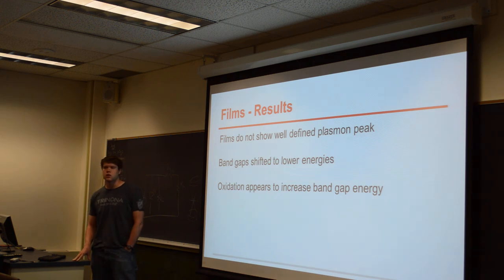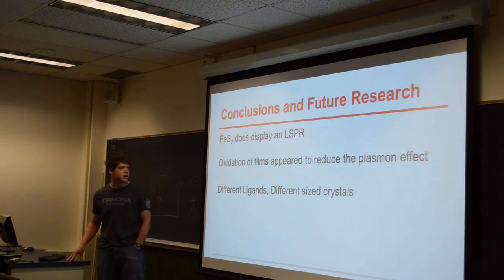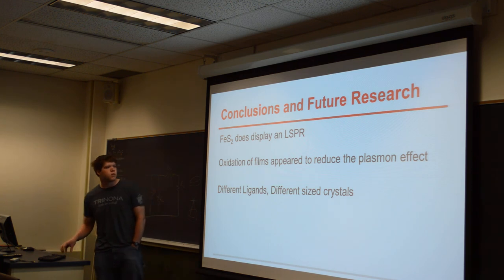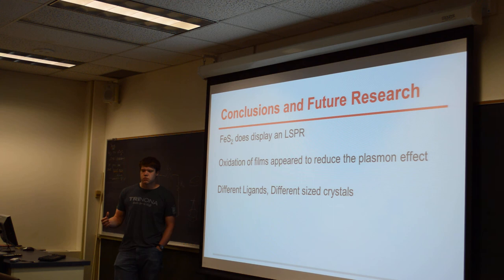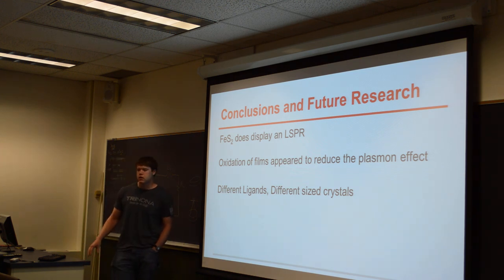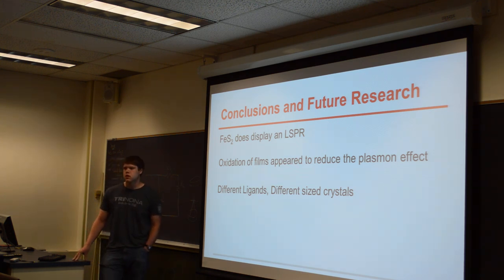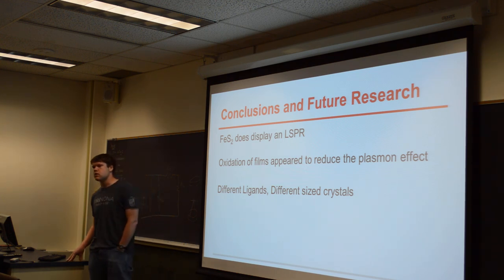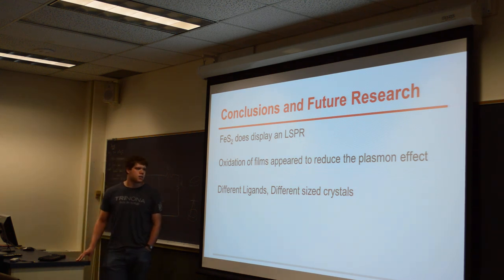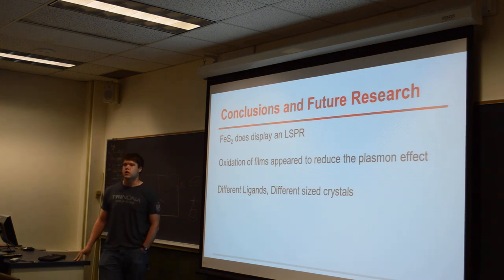We want to do more tests to really figure out how that effect is working. From this research, we can pretty safely say that pyrite is displaying a localized surface plasmon resonance. The oxidation of the films is reducing that effect, but it's not exactly clear to what extent. Other things we could try would be synthesizing it with a different ligand — the TOPO used here has a dielectric constant of about 2.6, so if we used a ligand with a different dielectric constant, that could alter the peak we see. Also, with the films there are pretty clear differences between different crystal sizes, so trying different quantities of ligands to get different sized crystals could have interesting results.